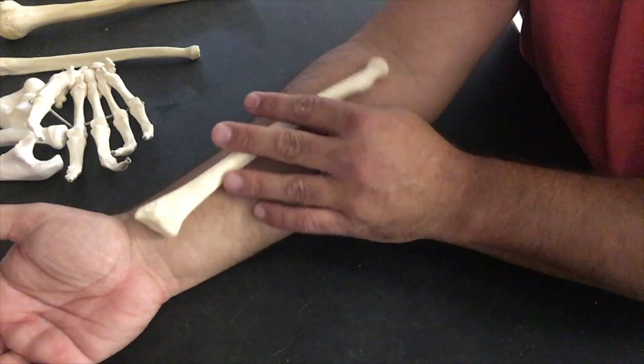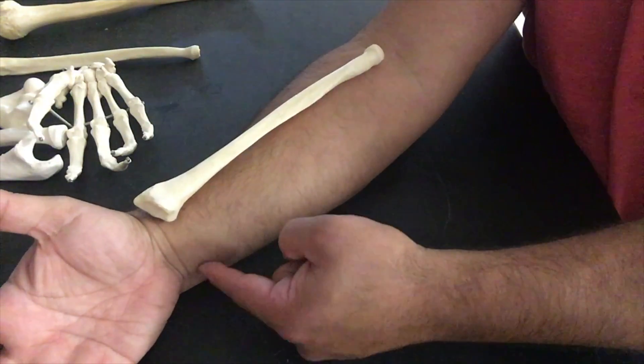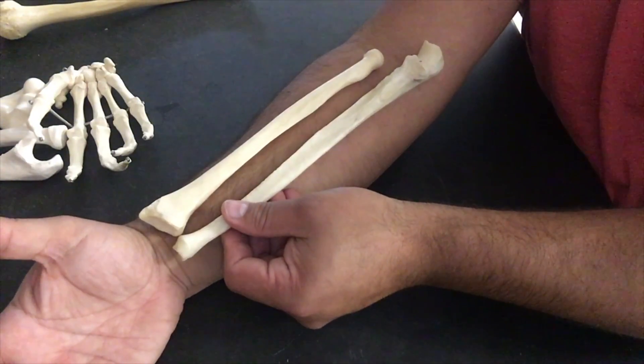The notch, the ulnar notch, has to face the ulna. So that makes sense. If I move my hand, hopefully this will balance.